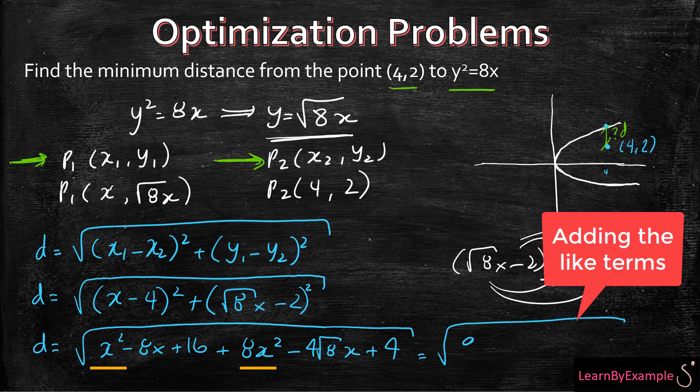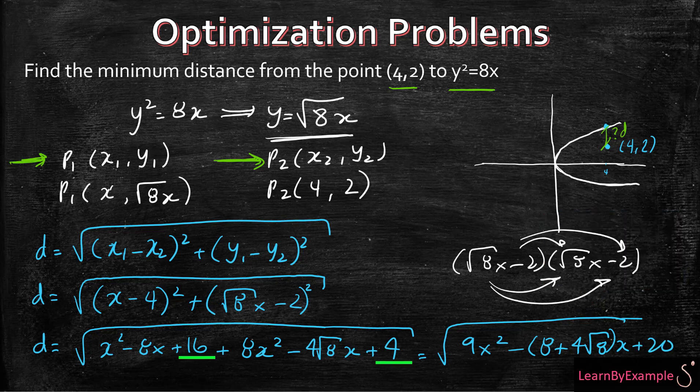So then you're just going to be left with the simplification of that, which is 9x² minus (8 plus 4 root 8)x plus 20.